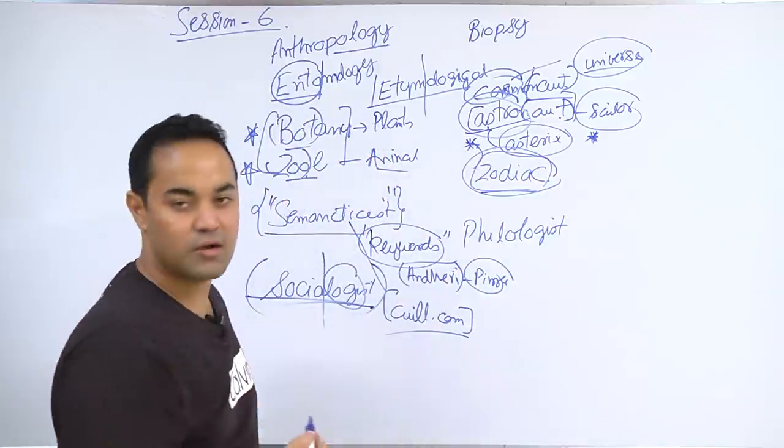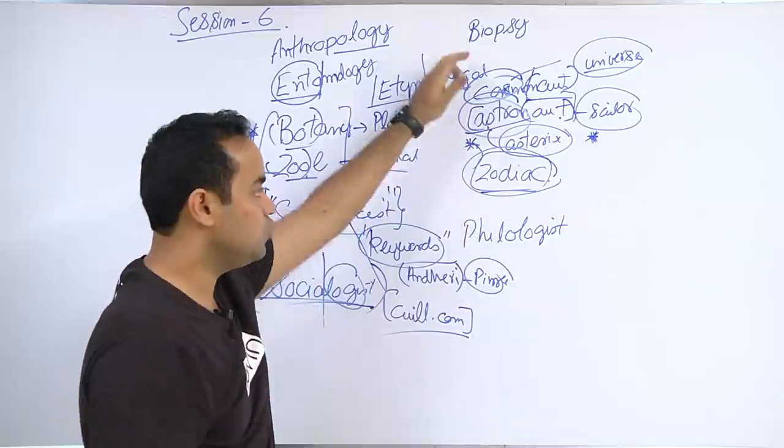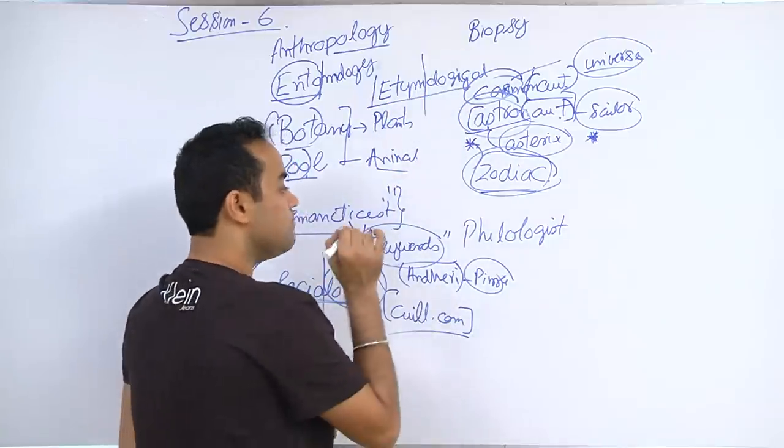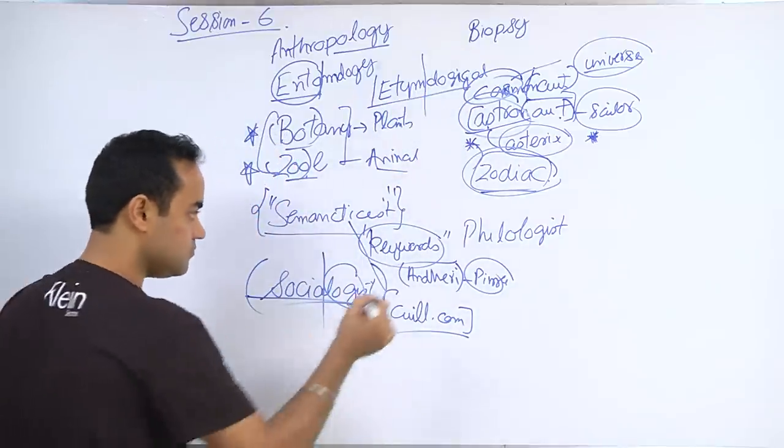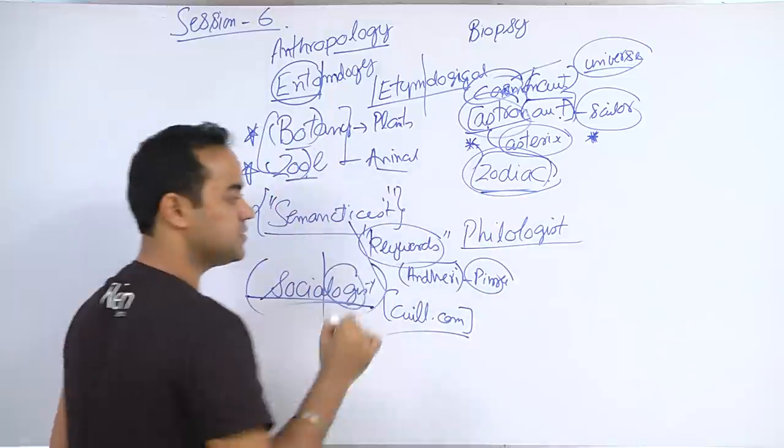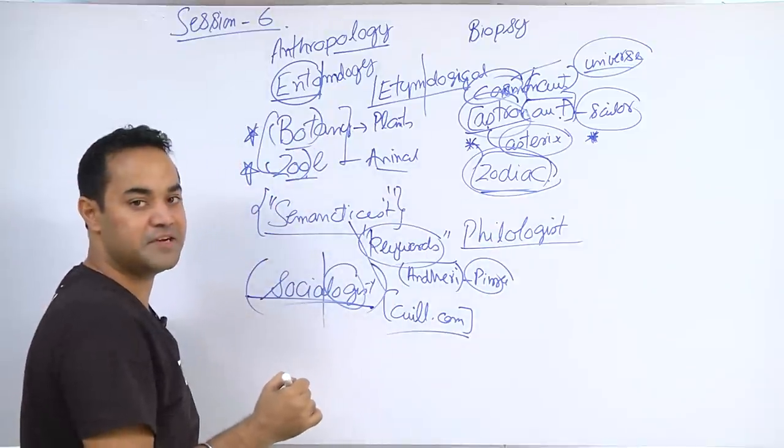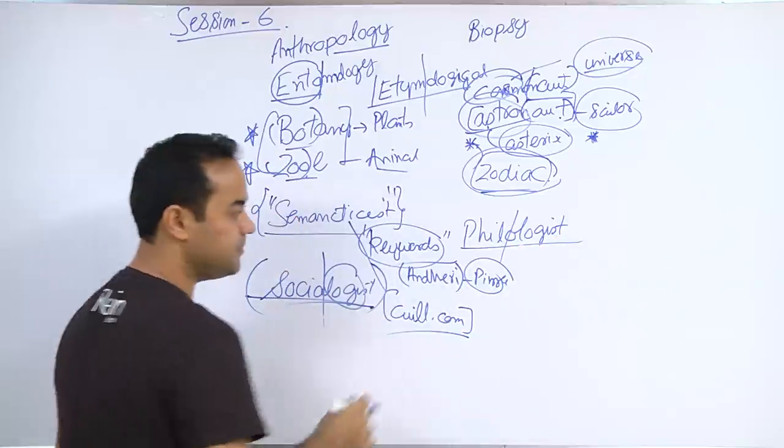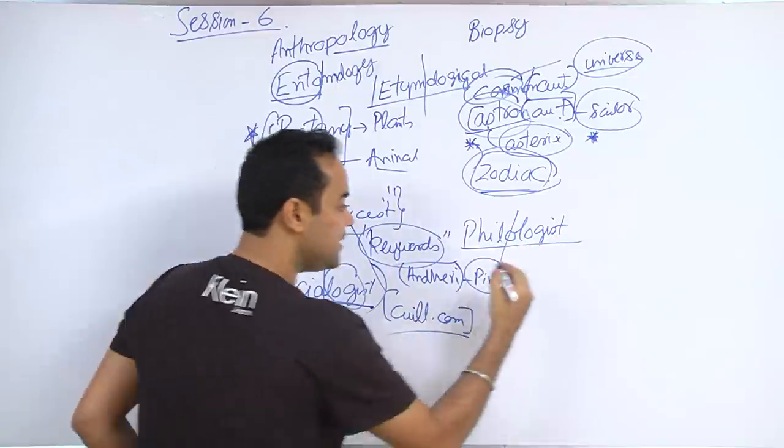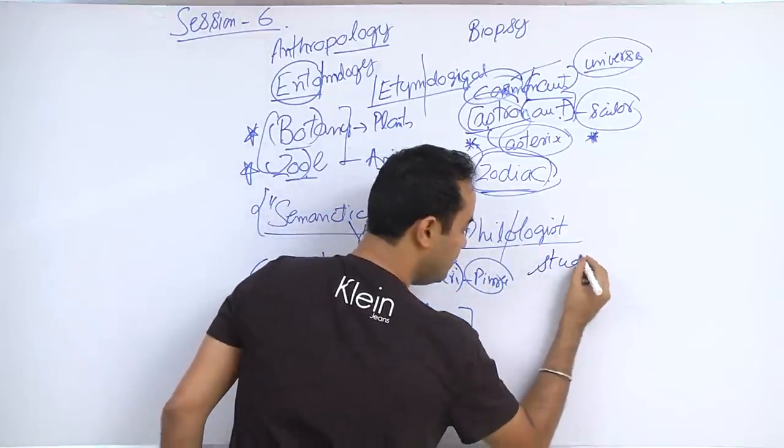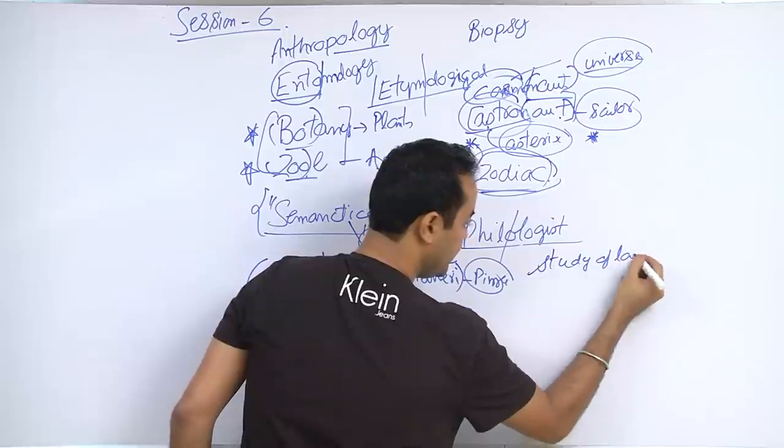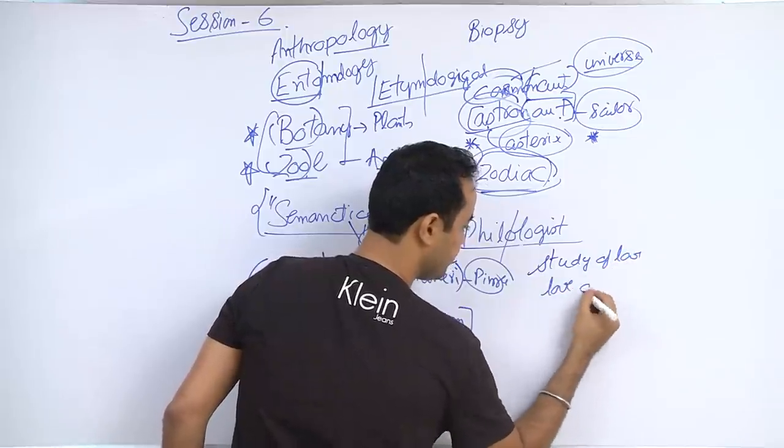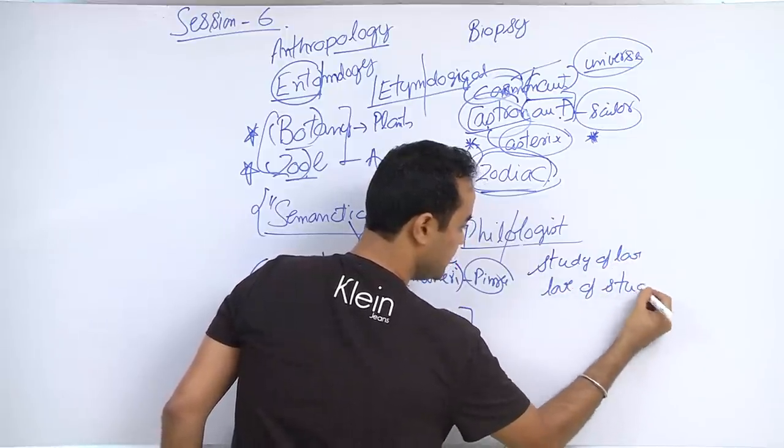Moving forward - zodiac shows all the zodiac signs, it's pretty straightforward, like your Libra, etc. It's also linked to one of the sciences. My favorite - philologist. Do you remember the word phil? We did it in session number three I guess. Phil means love, logi means study.